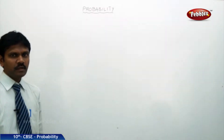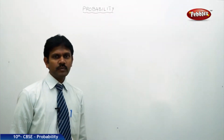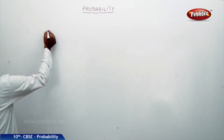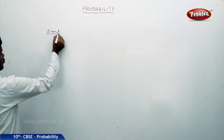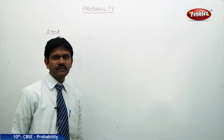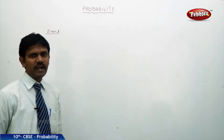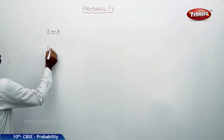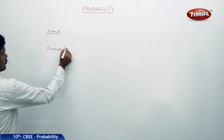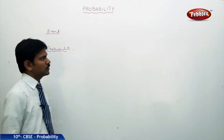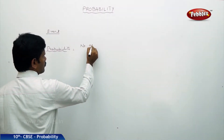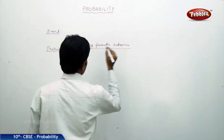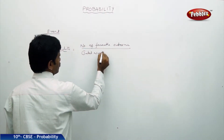Our next chapter is probability. Probability is a quantitative measure of outcomes. An event is the collection of some or all the items of a random experiment. The definition of probability is: number of favorable outcomes divided by total number of outcomes.